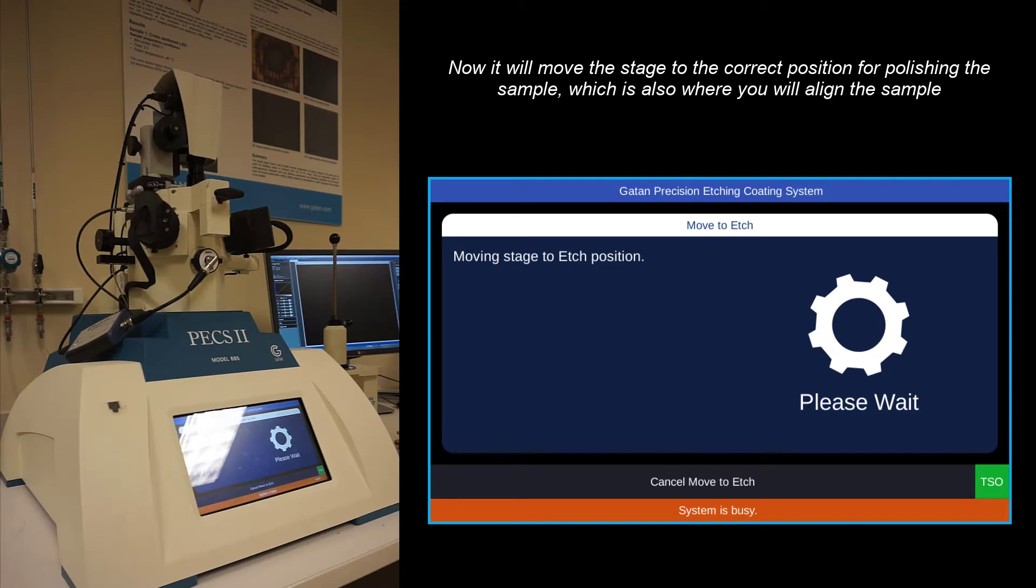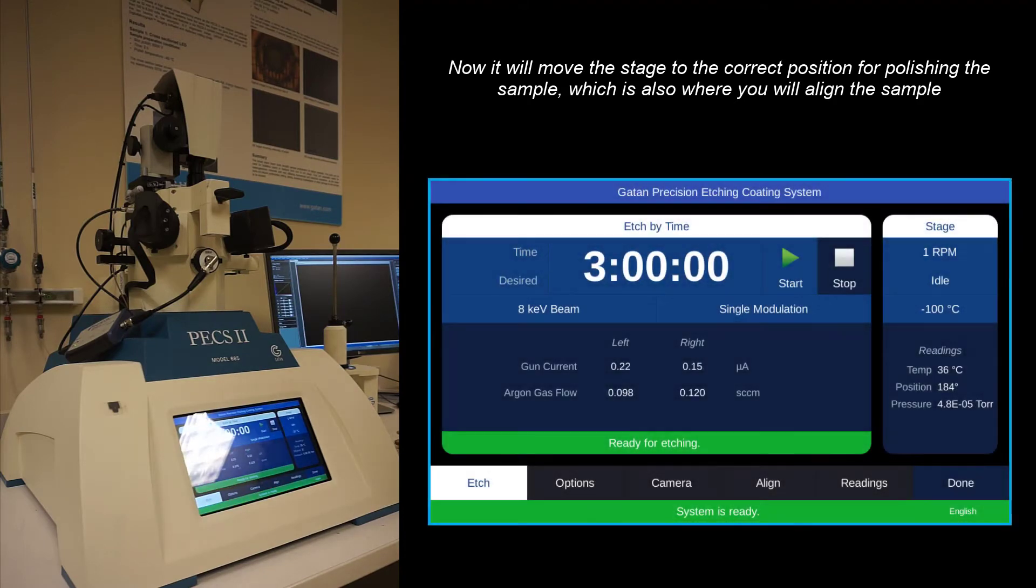And so now it will move the stage to the correct position for polishing the sample, which is also where you will align the sample.